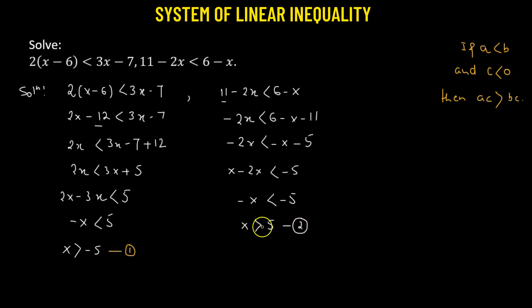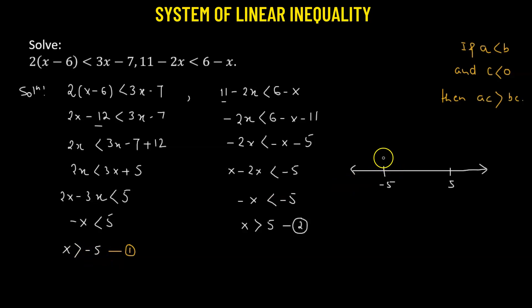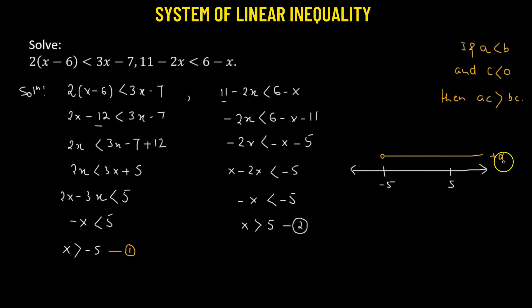Now we have to find a solution common to both 1 and 2. For that, we will consider a number line, where we have x equals negative 5 and x equals positive 5. From the first solution, x is greater than negative 5, so we consider all values to the right of negative 5. I've used a bubble to indicate that negative 5 is not included, and this extends to positive infinity.